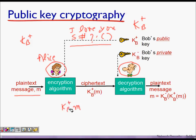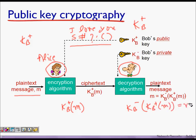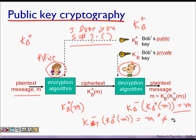Alice encrypts message m with kb+ to get the ciphertext, which is received by Bob. Bob applies his private key and decrypts it back to m. But if Trudy the intruder intercepts the message and applies her own private key, she gets some m-dash which is not equal to m. So she cannot read the actual message.